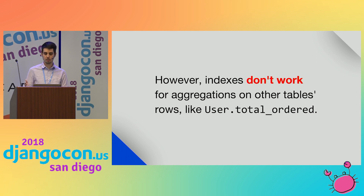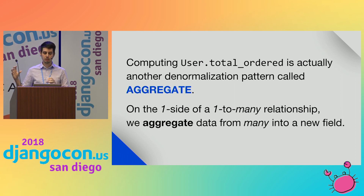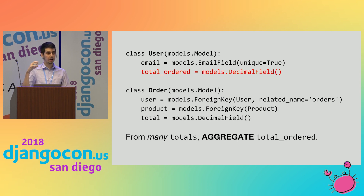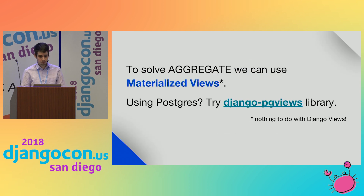However, indexes don't work for aggregations on other table rows, like the user total_order example. Computing total_order is another denormalization pattern called aggregate — on the one side of a one-to-many relationship, we aggregate data from the many side into a new field. We have total_order on user as an additional field, and from many order totals for that user we aggregate them into total_order. To solve aggregate, we could handle it manually, or we could use materialized views. If you're using Postgres, you can try the Django PG Views library. Materialized views are a DB-level concept where you declare a view — like a user_report materialized view — and use it like a regular queryset.